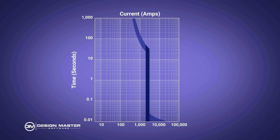Then you have the instantaneous trip — this is the current at which the breaker is going to close immediately, represented by the vertical piece on the right-hand side. In between those you have the sloping section where, as the current moves from the breaker rating to the instantaneous, it's going to close faster. Past the instantaneous trip, going off to the right, is the instantaneous delay — how long it actually takes to trip, because it's not truly instant; there is a very tiny delay.